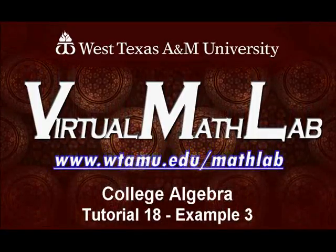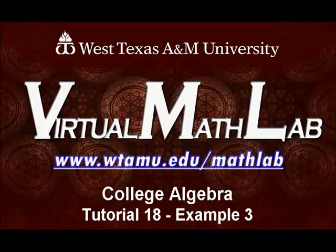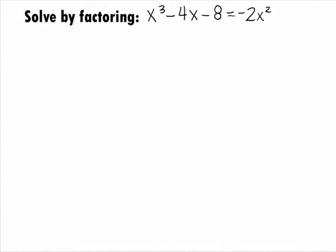Hi, welcome to the WTAMU Virtual Math Lab. This video will step you through College Algebra Tutorial 18 Example 3. In this example, we want to solve the polynomial equation x to the 3rd minus 4x minus 8 equals negative 2x squared by factoring.